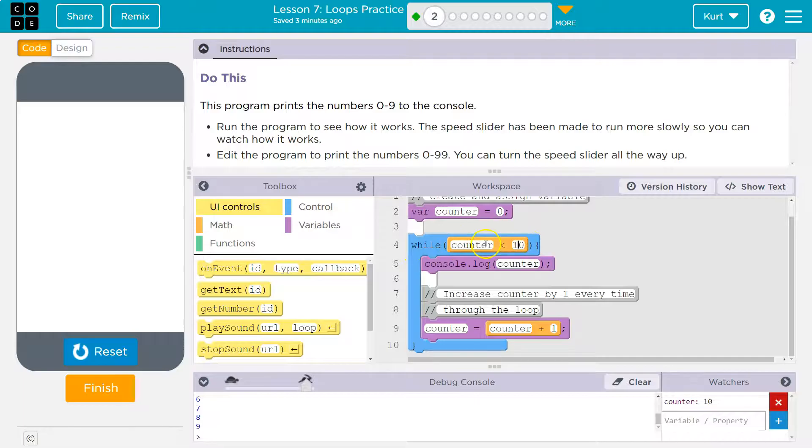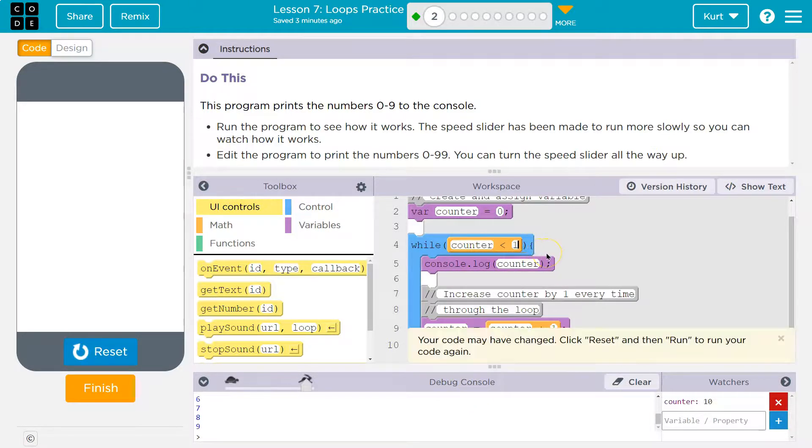Nope, that is false. So it doesn't run the code inside and keeps going. So it never prints out the 10 because 10 is not less than 10. So if you want to print to 99, let's make that 100. Boom.